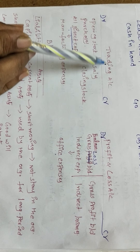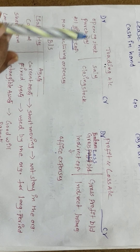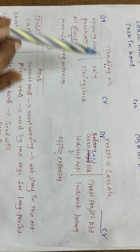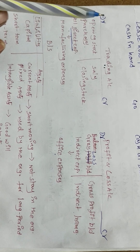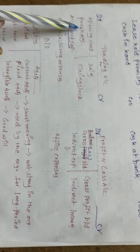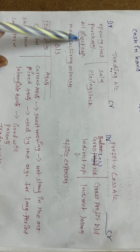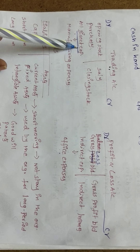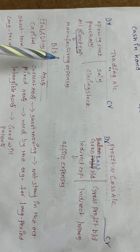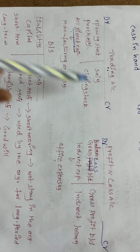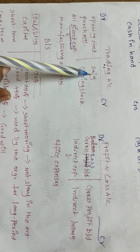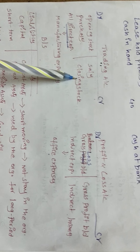In the trading account, according to the format, on the debit side we record opening stock, purchases, and direct expenses. Direct expenses means manufacturing expenses. On the credit side, we record only two items: sales and closing stock.